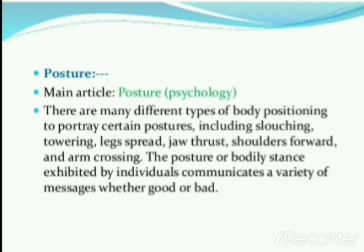There are many different types of body positioning. Body positioning used to portray certain postures includes slouching, towering, legs spread, jaw thrust, shoulders forward, or arm crossing. The postures repeatedly shown by individuals communicate a variety of messages, whether good or bad.